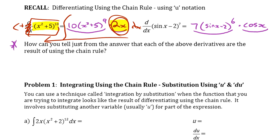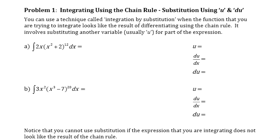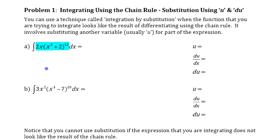It's called substitution because we substitute the inside function and give it a name — we usually call it u. Now, to know that substitution is going to work here: that looks like it could be the result of the chain rule because you have a composition — an inside function raised to the power of 12 — and you also have the derivative of that inside function, 2x, right there. That's how we know it's going to work.